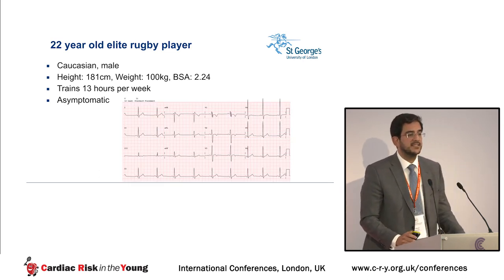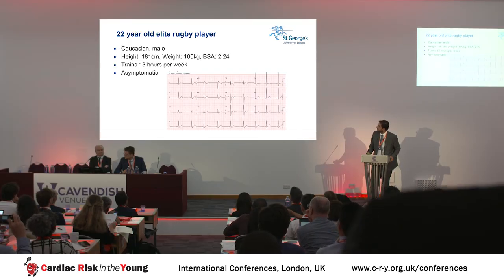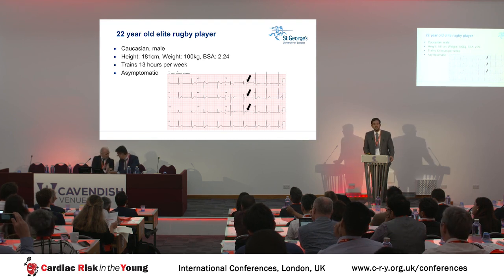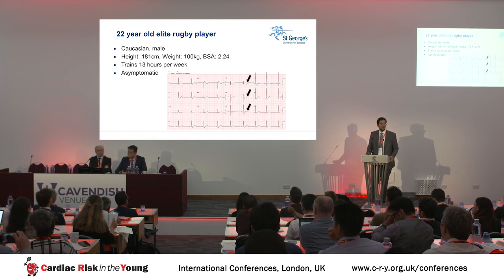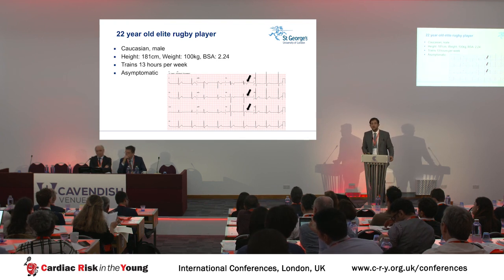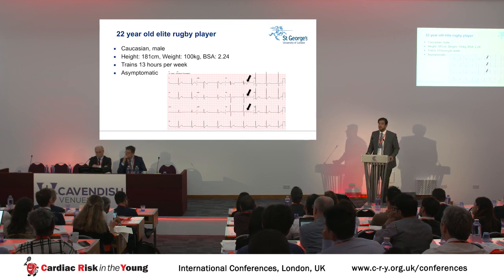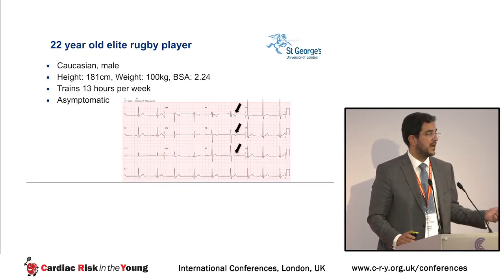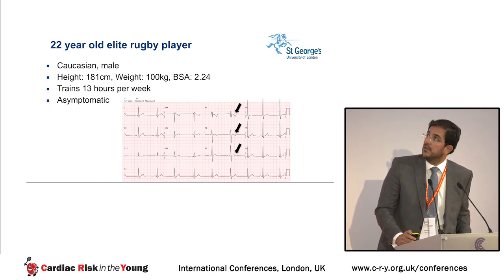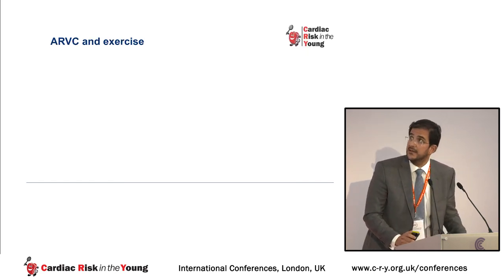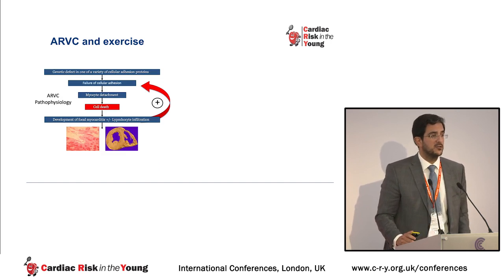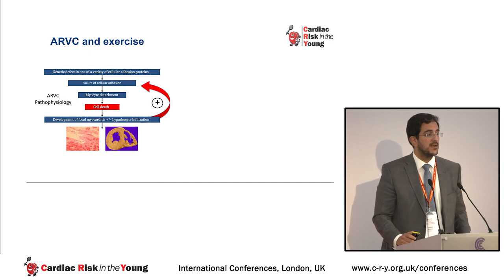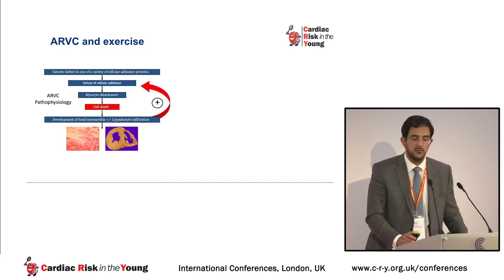As you can clearly see, his ECG demonstrates predominantly anterior T-wave inversion — T-wave inversion beyond V2, going to V3. Based on what Professor Sharma said, we must be concerned because he is a post-pubertal white athlete. This is also the cardinal sign of arrhythmogenic right ventricular cardiomyopathy, a very challenging condition to diagnose — we'll have more details about ARVC from Professor Corrado later on.